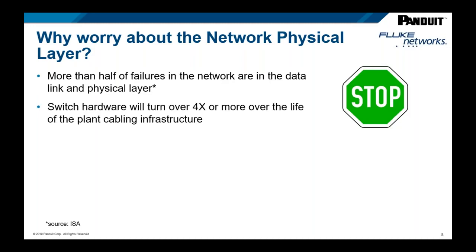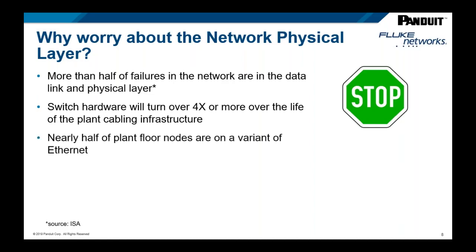When we don't baseline the original cable installation, we don't really know its capability, making it difficult to grow that network when upgrades or migrations need to occur. The cabling plant is going to be in place much longer than the hardware connected to it — switches and electronics typically cycle out four times over the life of the cabling. More than 50% of plant nodes are now on some variant of Ethernet, so a disciplined approach can help reduce risks and improve processes.